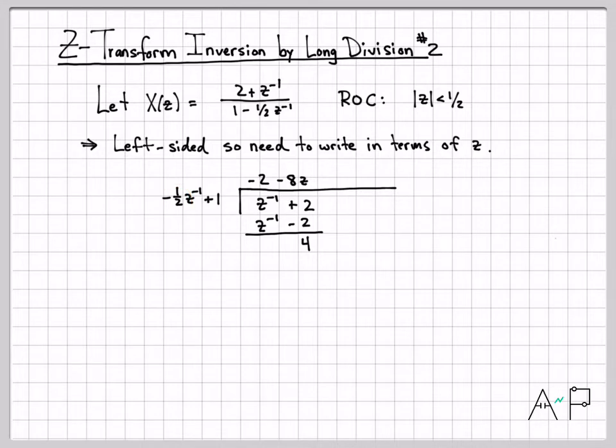So negative 8 times negative 1 half does give me 4. And then z times z to the negative 1 gives me z to the 0, which is 1. And I do indeed end up with 4. But then I have to multiply this times this still, which gives me negative 8z. And then when I subtract, the 4s go away, and I end up with 8z.